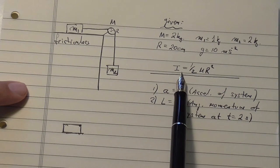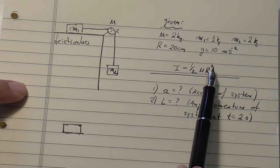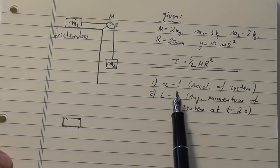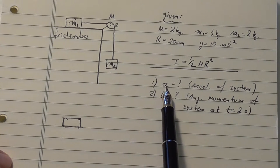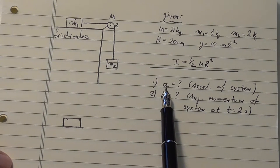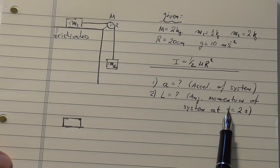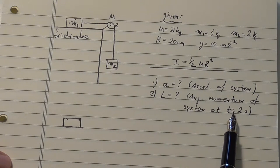And the moment of inertia, that's the new element that is added, is one half m r squared, where m is the mass of the disk. What we're asked to find is, one, the acceleration of the system, and this is the linear acceleration of the system, not the angular. And second, what's the angular momentum of the system at time equals 2 seconds.